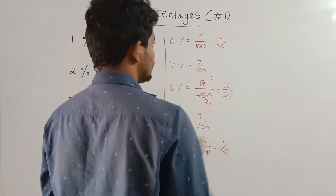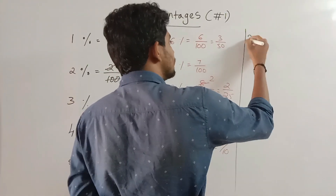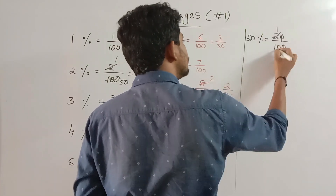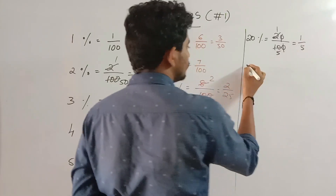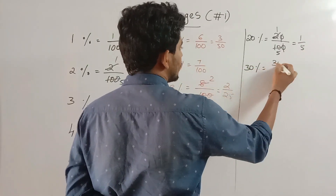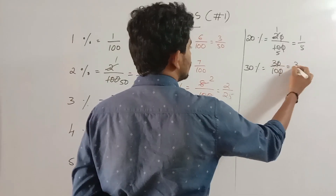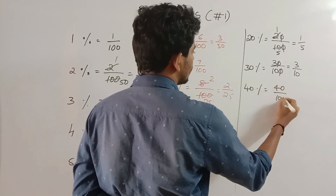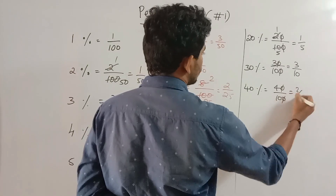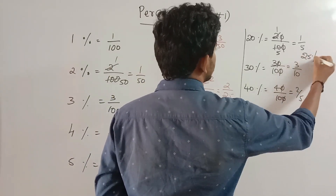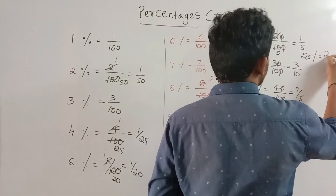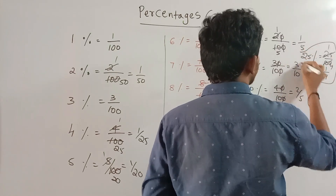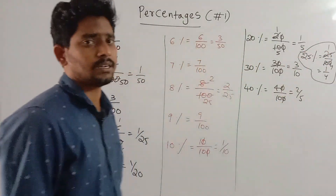Twenty percentage is 20 by 100, which simplifies to 1 by 5. Thirty percentage is 30 by 100, which equals 3 by 10. Forty percentage is 40 by 100, which simplifies to 2 by 5. Twenty-five percentage is 25 by 100, which equals 1 by 4. To find 25% of a number, multiply 1 by 4 into that number.